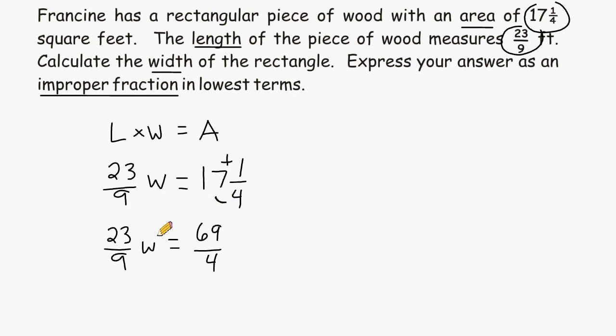Now what we want to do to isolate for the w is to get rid of this fractional coefficient of 23 over 9. And to get rid of any coefficient that is a fractional value, you can multiply it by its own reciprocal. So I'm going to write 9 23rds right next to 23 over 9. And what happens now that we multiply this value by its own reciprocal is it allows us to cancel out both of these 23s and both of these 9s.